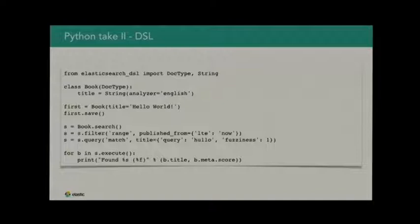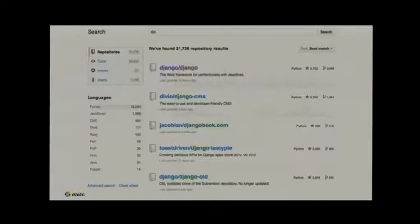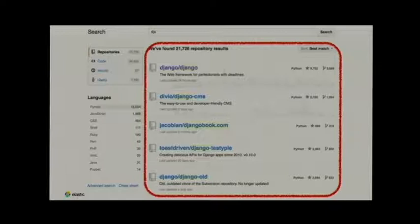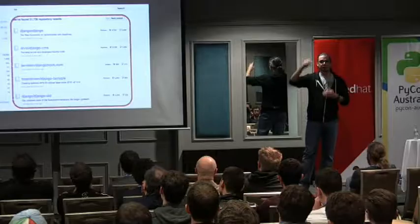So instead, we created a nicer-looking DSL for this. In this example, we are creating a doctype, which is essentially something like a model, allowing us to create the schema. We have a book that has one field called title, which uses the English analyzer. Then we index a document, and then we can search. What we get back is the result — that is all you have to do.